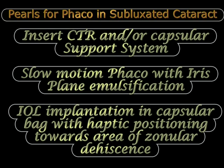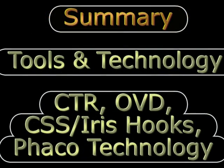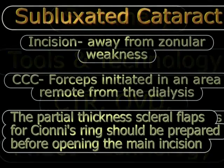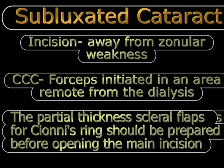Use a CTR or capsular support system according to the particular case. Slow-motion phacoemulsification should always be performed, ideally at the iris plane to reduce movement in the capsular bag. The IOL is implanted in the capsular bag with haptic position toward the area of zonular dehiscence for additional post-operative stabilization. To summarize, tools and technology now available — CTR, viscoelastic devices, capsular support systems, iris hooks, and improved phaco technology — have made phacoemulsification in subluxated cataracts possible.